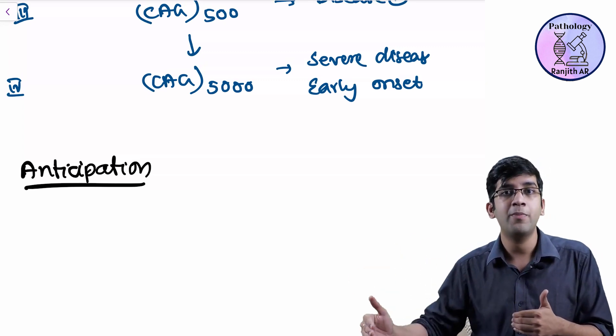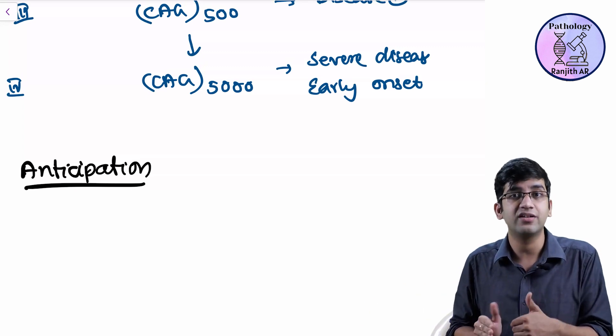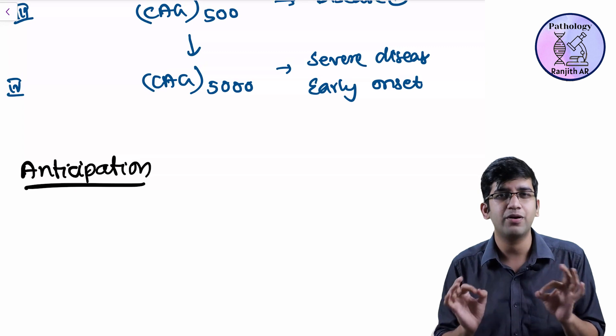Anticipation. Mom had it at 50 or dad had it at 50, not sure who it is. Child has it at 30. Her child will have it at 20. Anticipation. Perfect example.